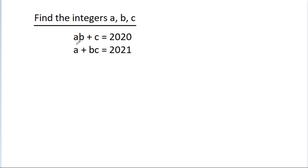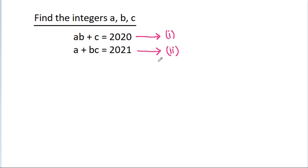We are given that AB + C = 2020 and A + BC = 2021. We have to find the integers A, B, and C. Suppose this is equation 1 and this is equation 2, and if we subtract equation 1 from equation 2: